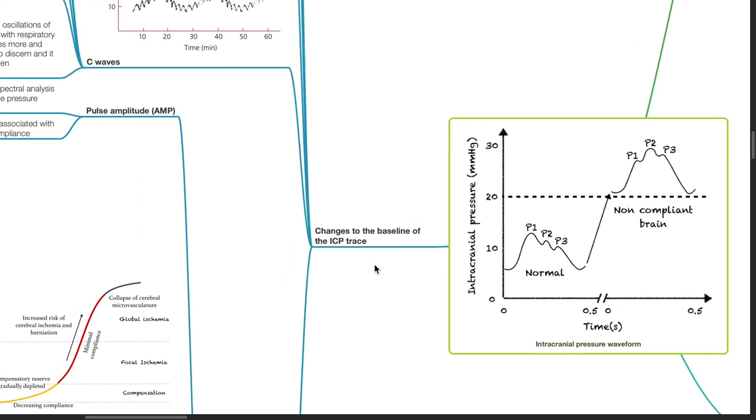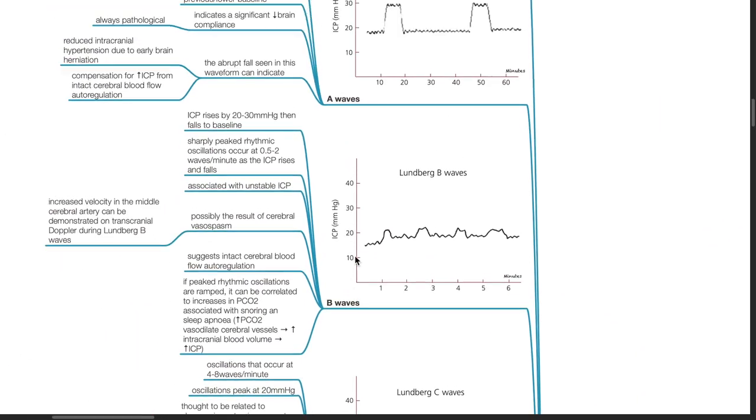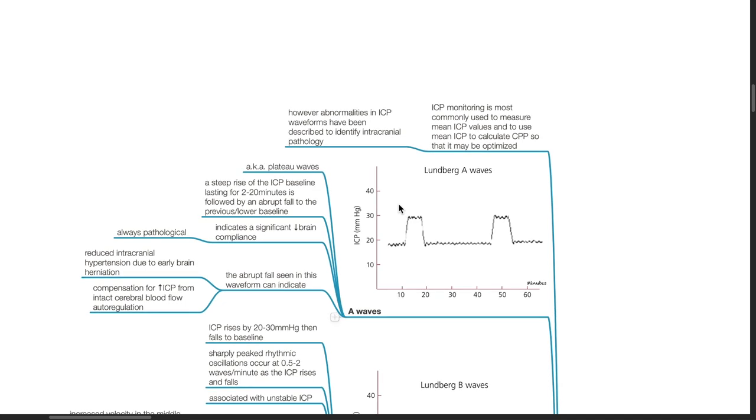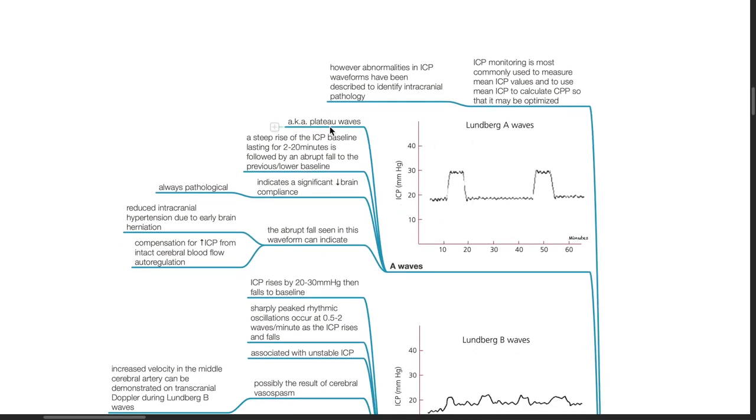Changes to the baseline of the ICP trace. ICP monitoring is most commonly used to measure mean ICP values and to use mean ICP to calculate cerebral perfusion pressure so that it may be optimized. However, abnormalities in ICP waveforms have been described to identify intracranial pathology. Lundberg A waves, also known as plateau waves. A steep rise of ICP baseline lasting for 2 to 20 minutes is followed by an abrupt fall to the previous lower baseline. This indicates a significant decrease in brain compliance and is always pathological. The abrupt fall seen in this waveform can indicate reduced intracranial pressure due to early brain herniation or compensation for increased intracranial pressure from intact cerebral blood flow autoregulation.